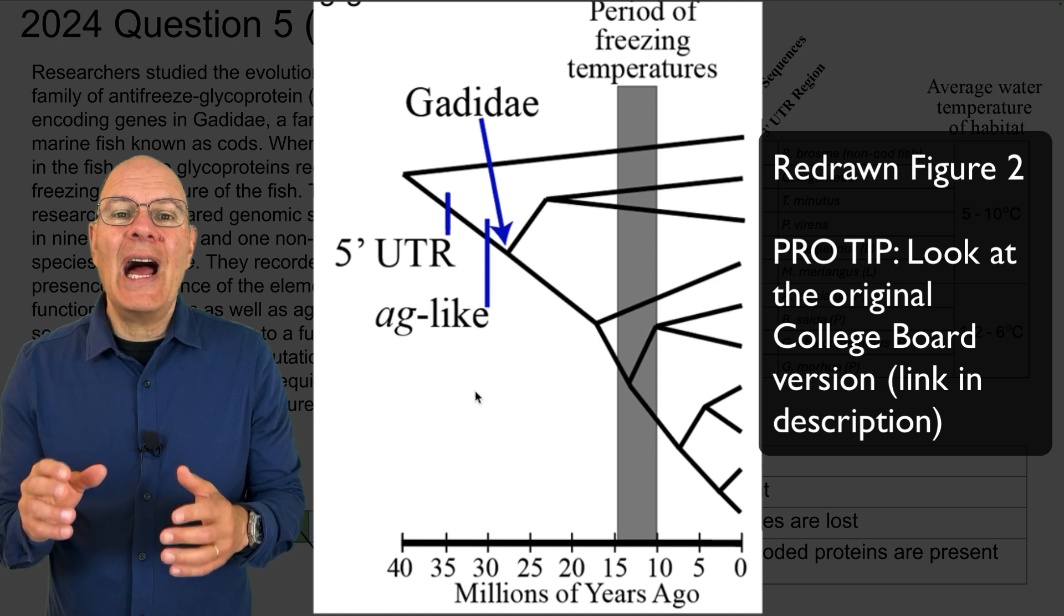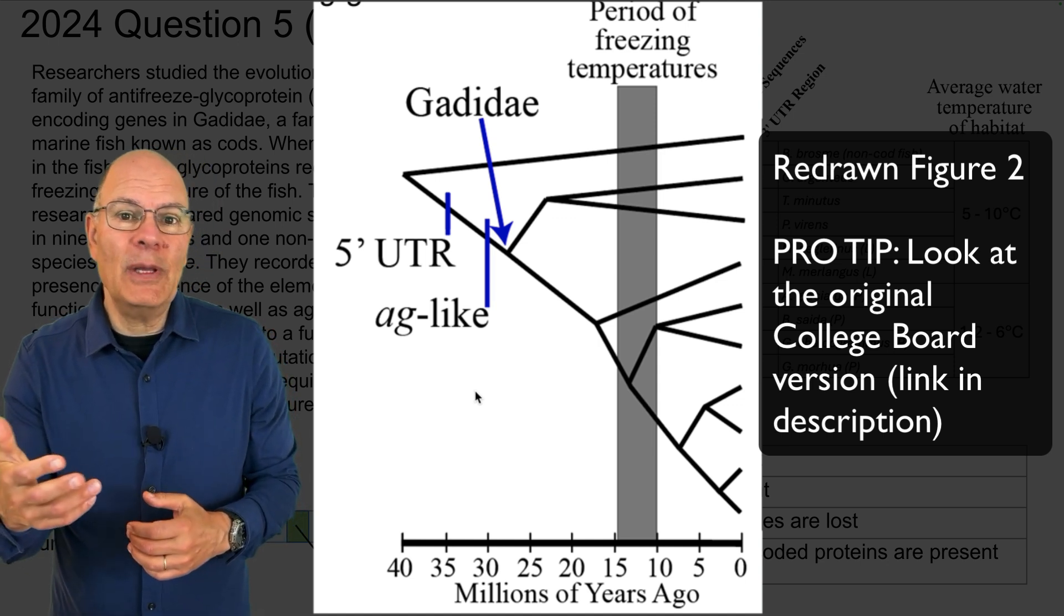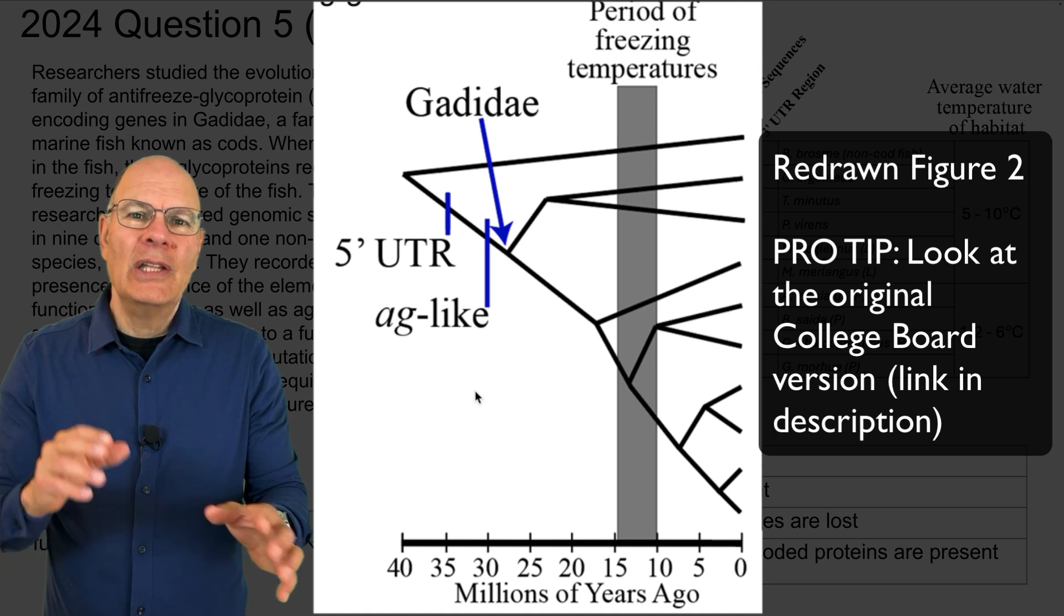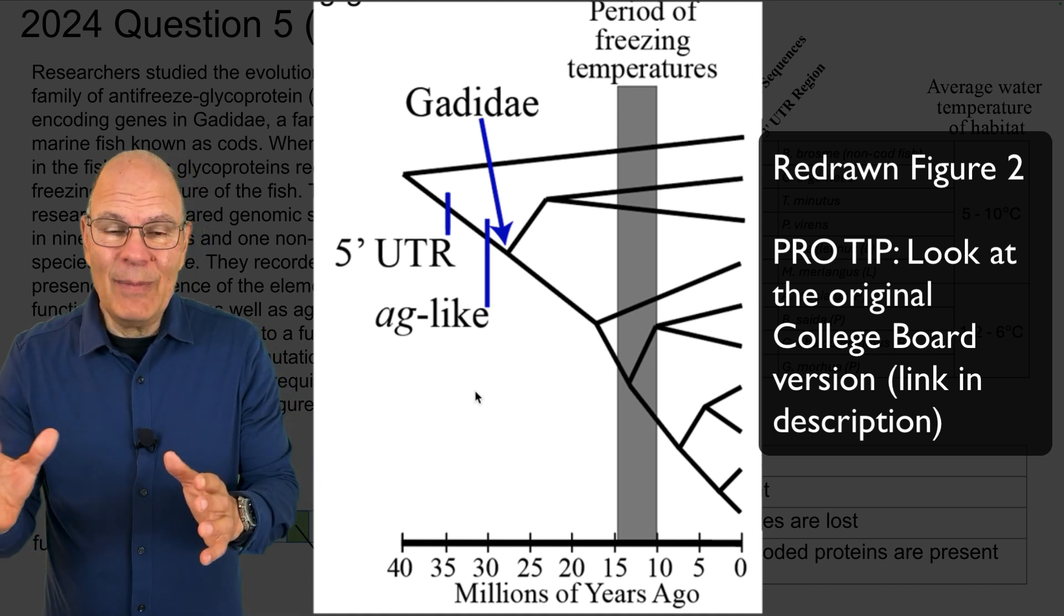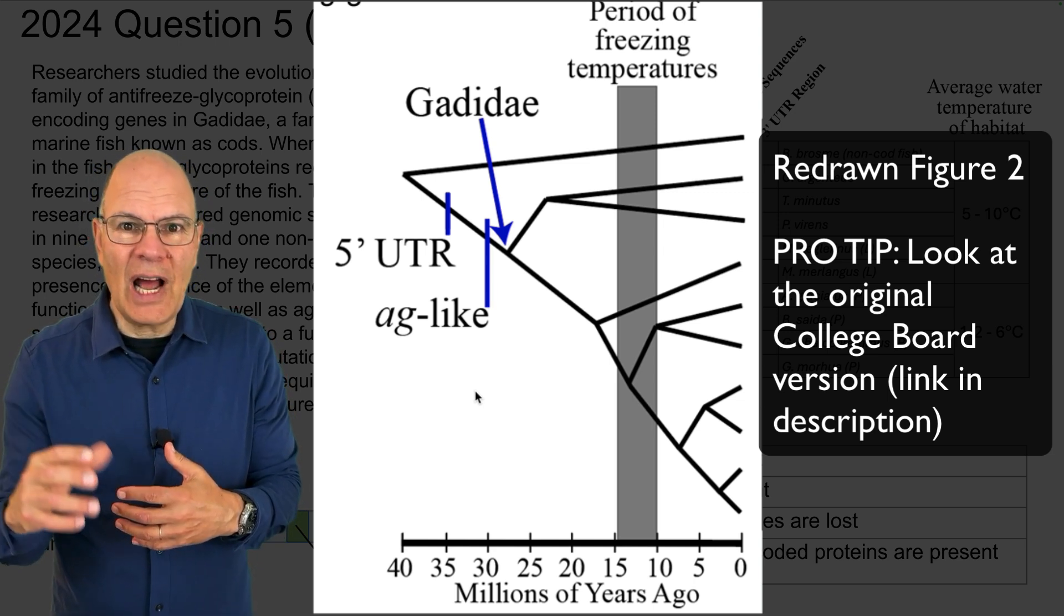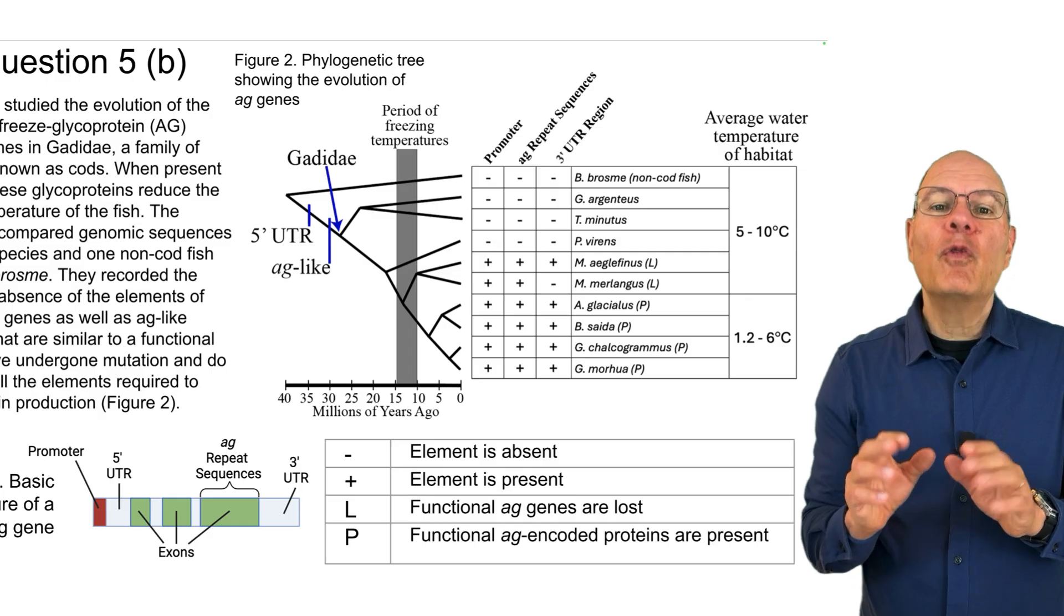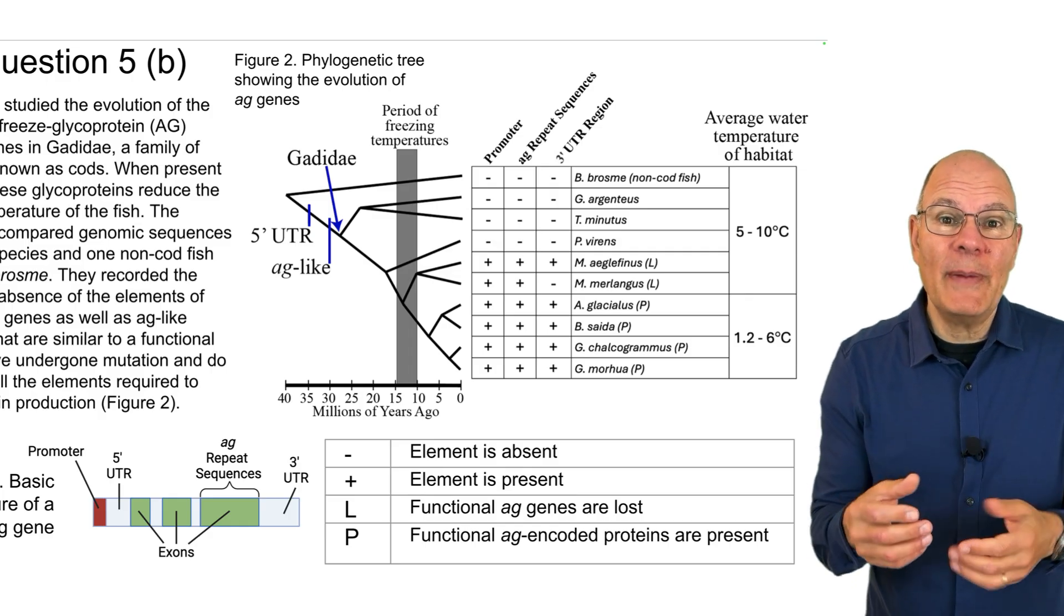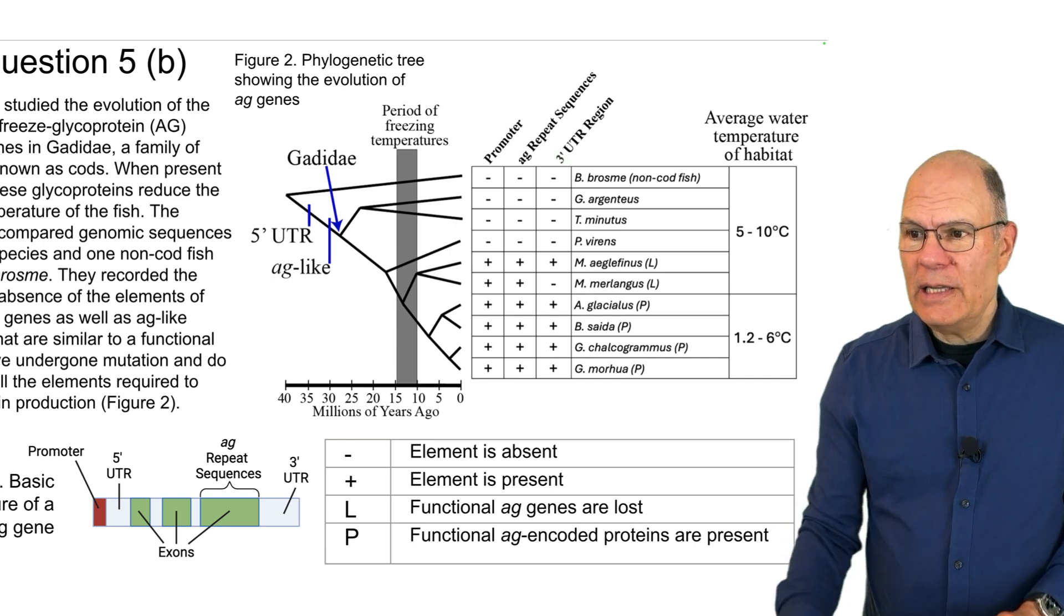I want to emphasize that I redrew figure two, and you should look at your copy of your downloaded FRQ to see the College Board's information. They're the same in terms of the information, but the style is different, and I want you to get used to the style in which the College Board presents its information. Before going to the question, let's talk a little bit about how you read a phylogenetic tree like this and the accompanying table.